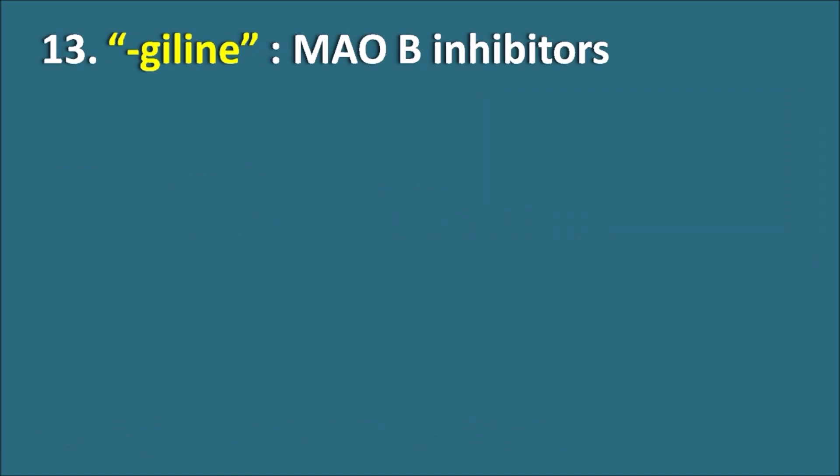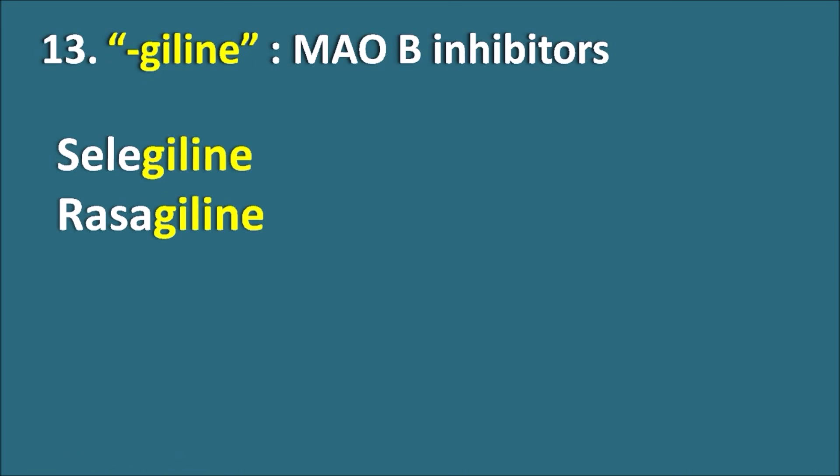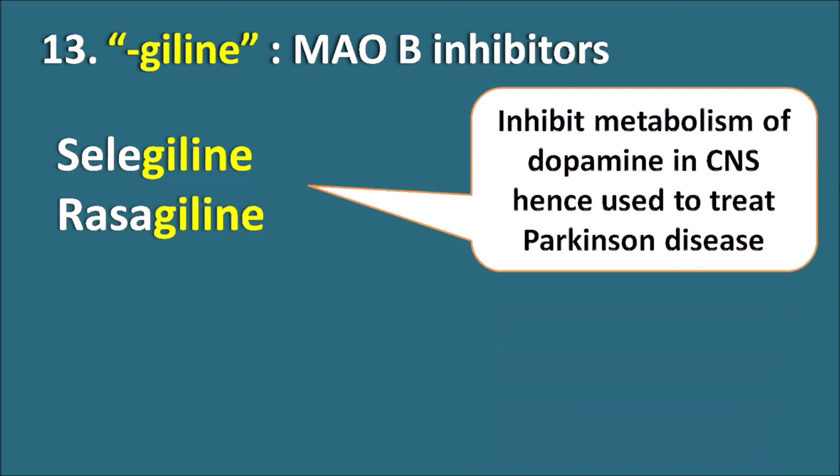Thirteenth, the suffix '-giline' indicates MAO-B inhibitors. Drugs like Selegiline and Rasagiline inhibit the metabolism of dopamine within the CNS and are hence used to treat Parkinson's disease.